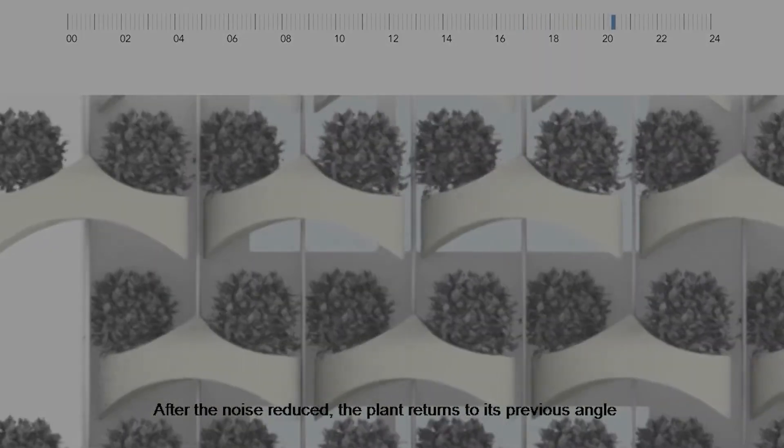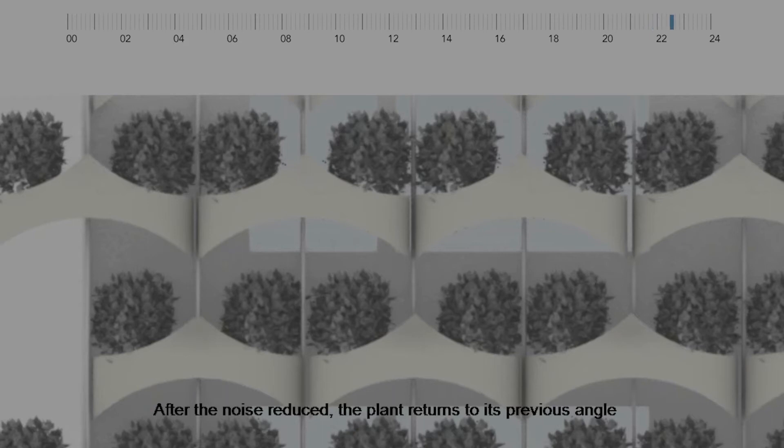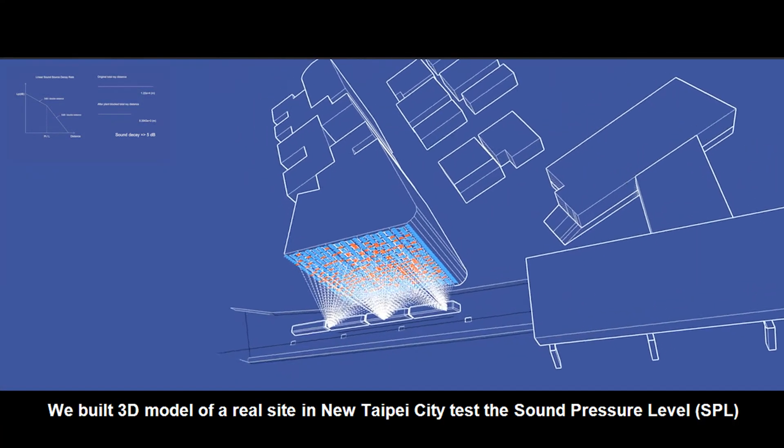After the noise is reduced, the plant returns to its previous angle and rotates slowly following the sunlight again.